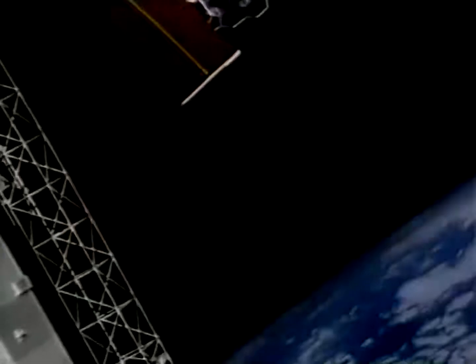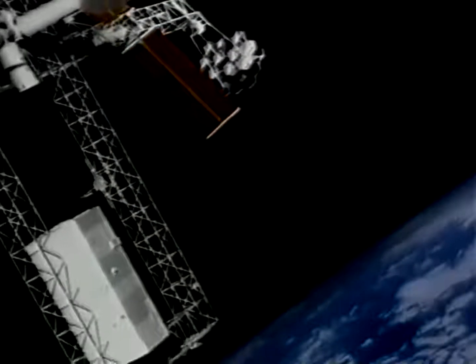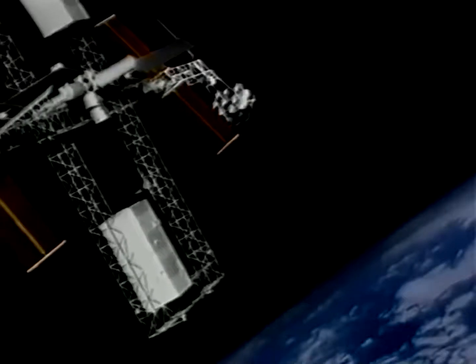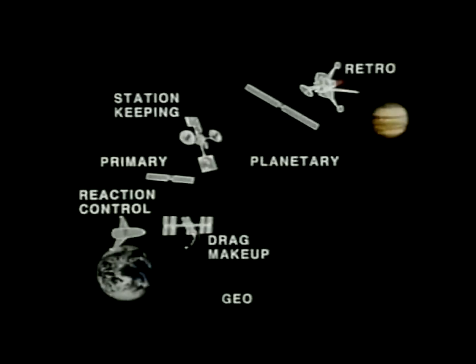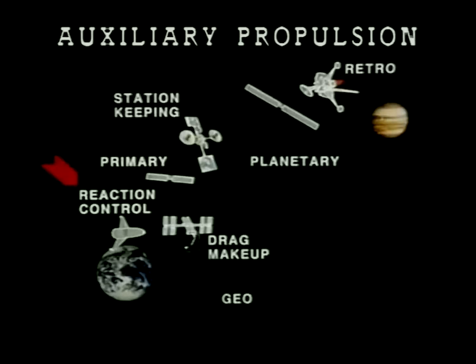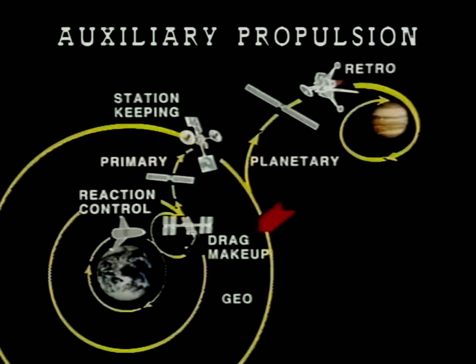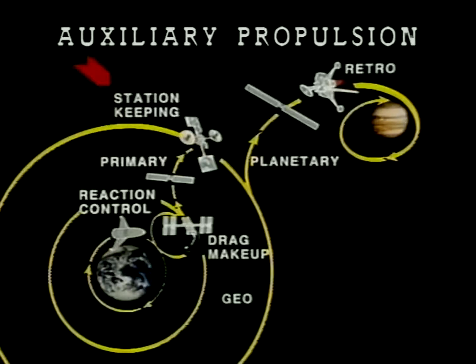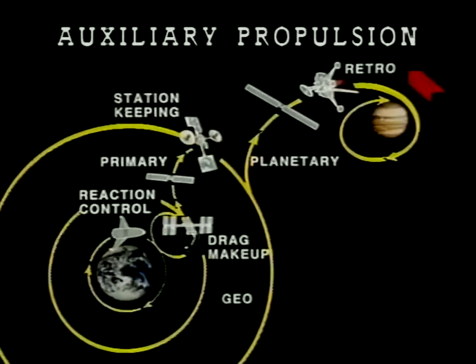Low thrust propulsion is essential for all space missions, and NASA's Lewis Research Center is conducting programs to provide a broad range of low thrust propulsion concepts for both auxiliary and primary functions. Auxiliary propulsion is used for keeping space systems in desired locations or for orientation. Typical examples are the reaction control system for Earth-to-orbit vehicles, drag makeup and attitude control for low Earth-orbit systems, station keeping for higher orbit systems such as geosynchronous satellites, and retro propulsion functions near planetary bodies.